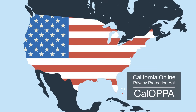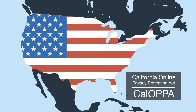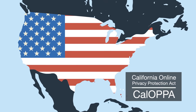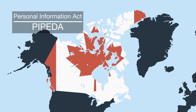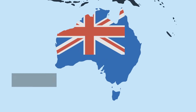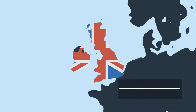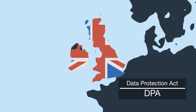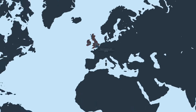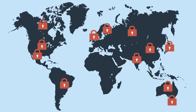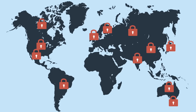In the US, the California Online Privacy Protection Act demands you have a privacy policy on your website or app. In Canada, it's the Personal Information Act. In Australia, it's the Privacy Act. In the UK, it's the Data Protection Act. Most countries around the world have laws and regulations on the privacy of user data. Your business needs to be compliant with the law.